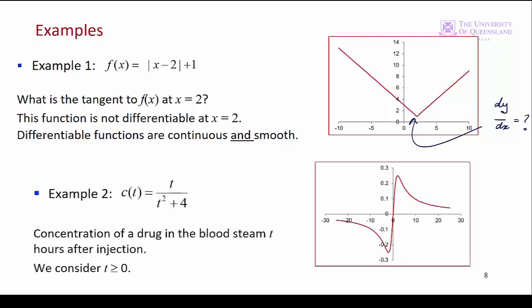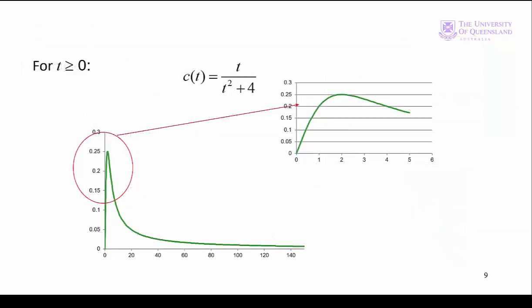Our second example is from biology. Medical doctors are interested in the concentration of a drug in the bloodstream over time. So we have a function c of t equal to t over t squared plus 4. Here's the entire function. However, time t equals 0 represents the time the drug is injected, so our domain is t greater than or equal to 0. How does a doctor determine when the concentration is a maximum?